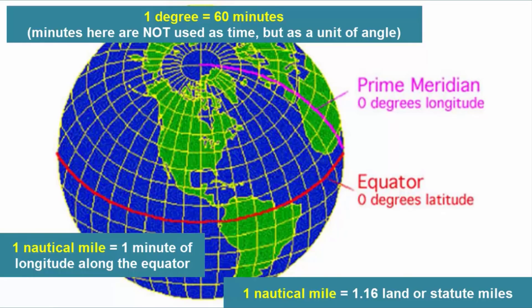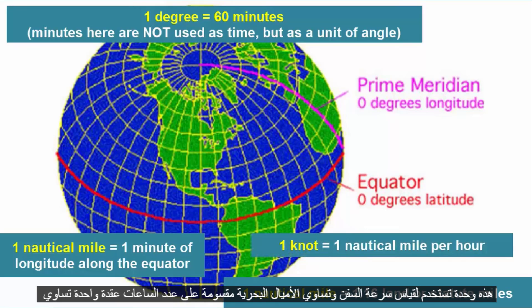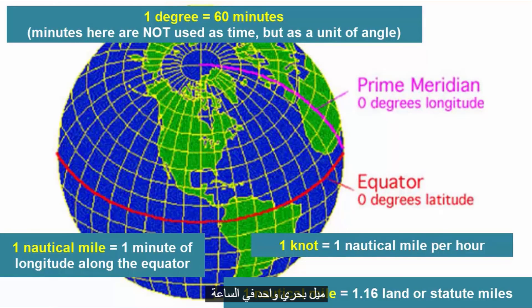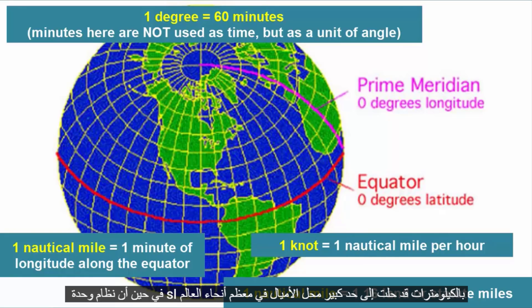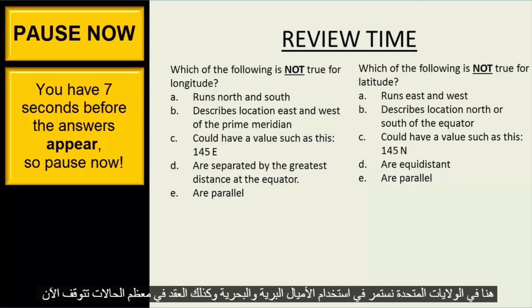Why does this matter? Marine navigation often uses nautical miles as the standard distance unit. If you've ever heard of knots, that's a unit used to measure the speed of ships and is equal to nautical miles divided by hours — one knot equals one nautical mile per hour. While the SI unit system with kilometers has largely replaced miles in most parts of the world, here in the US we continue to use land and nautical miles as well as knots in most instances.